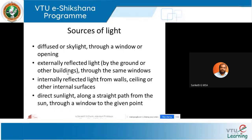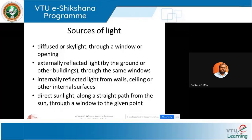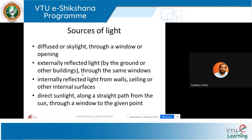We study light behavior to understand how we can design buildings practically, using an equation to understand these components. The four important points to keep in mind are: diffused or skylight — light entering through a window, which may be translucent, semi-opaque, or have blinds or curtains; externally reflected light — reflected from a building, water body, or ground outside the opening.